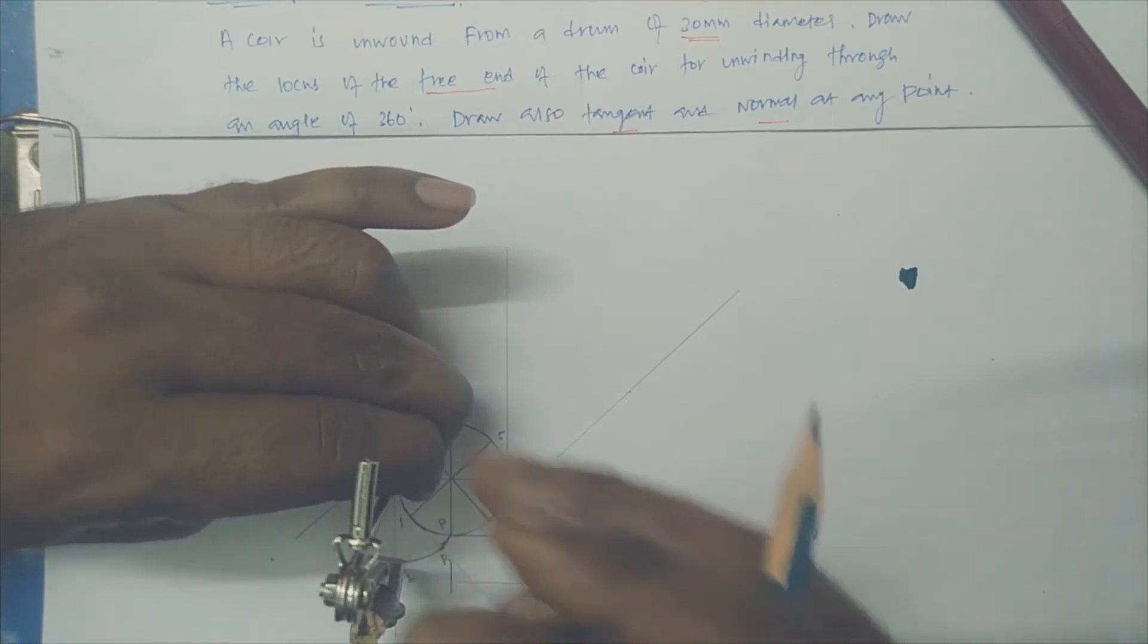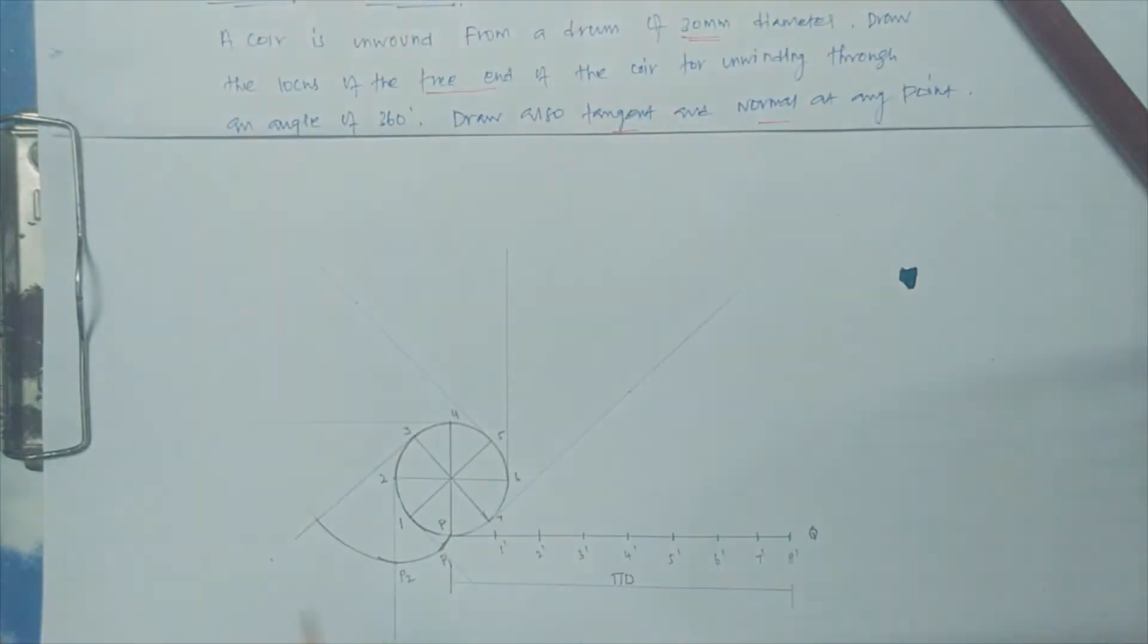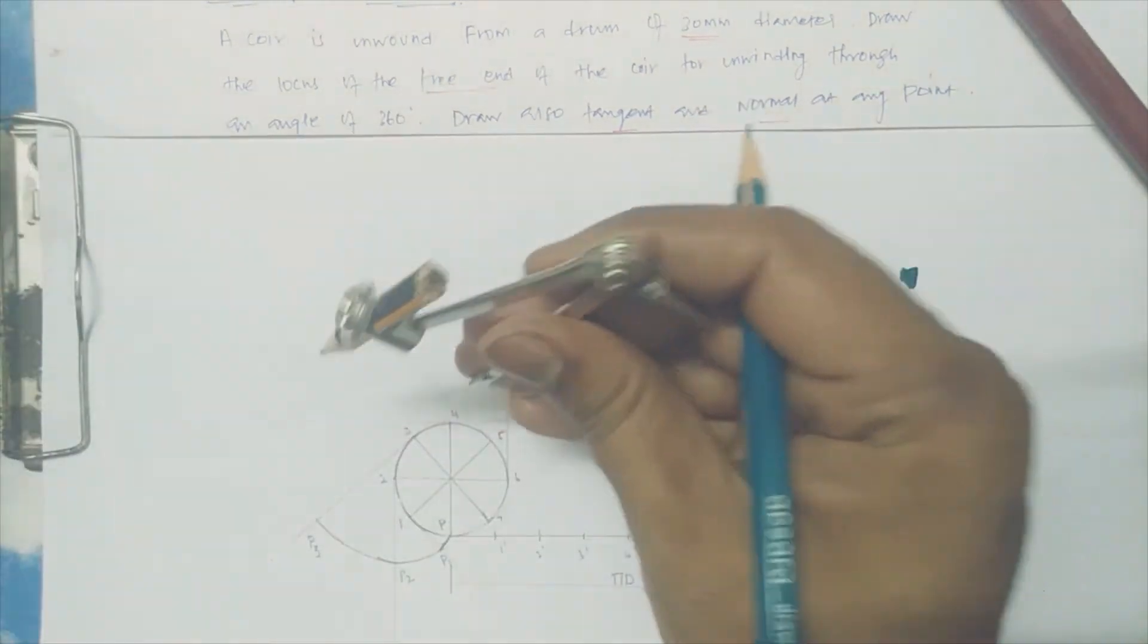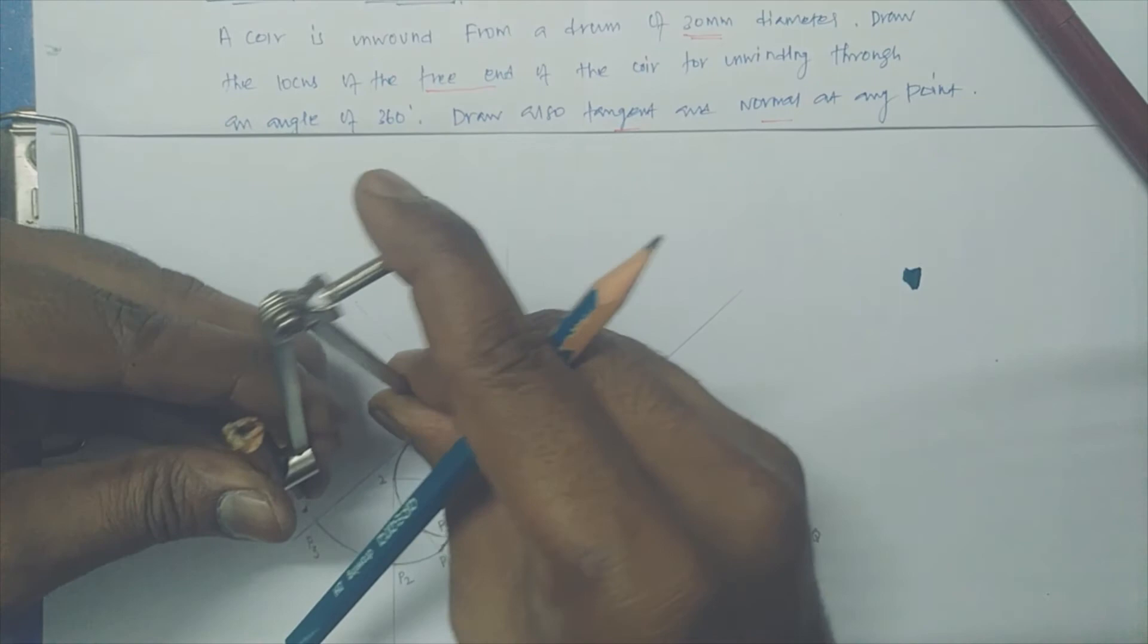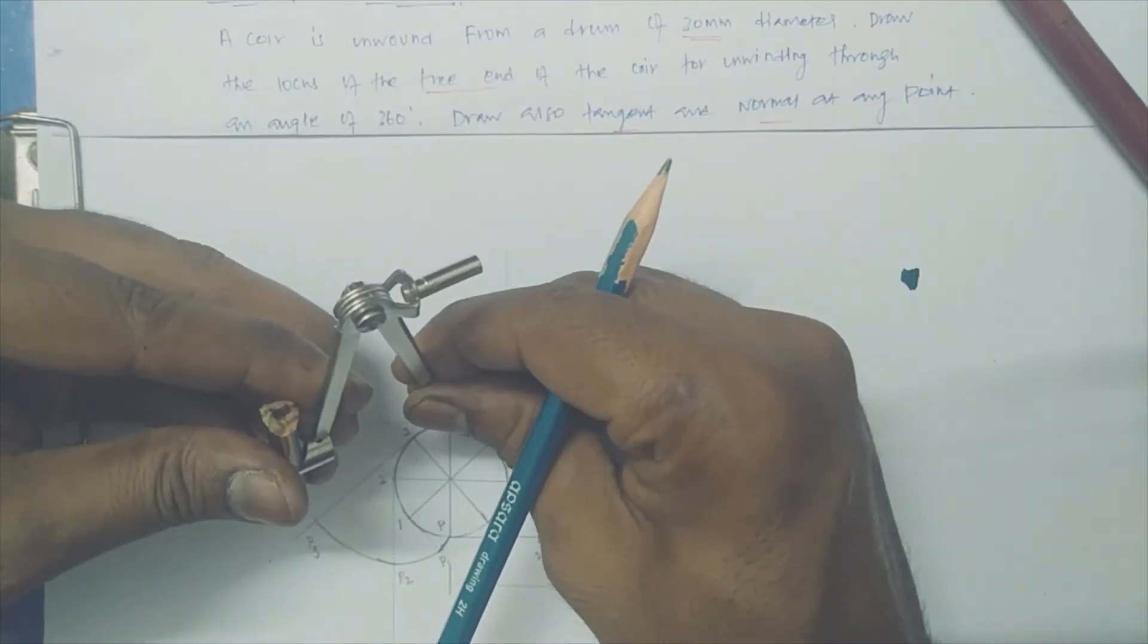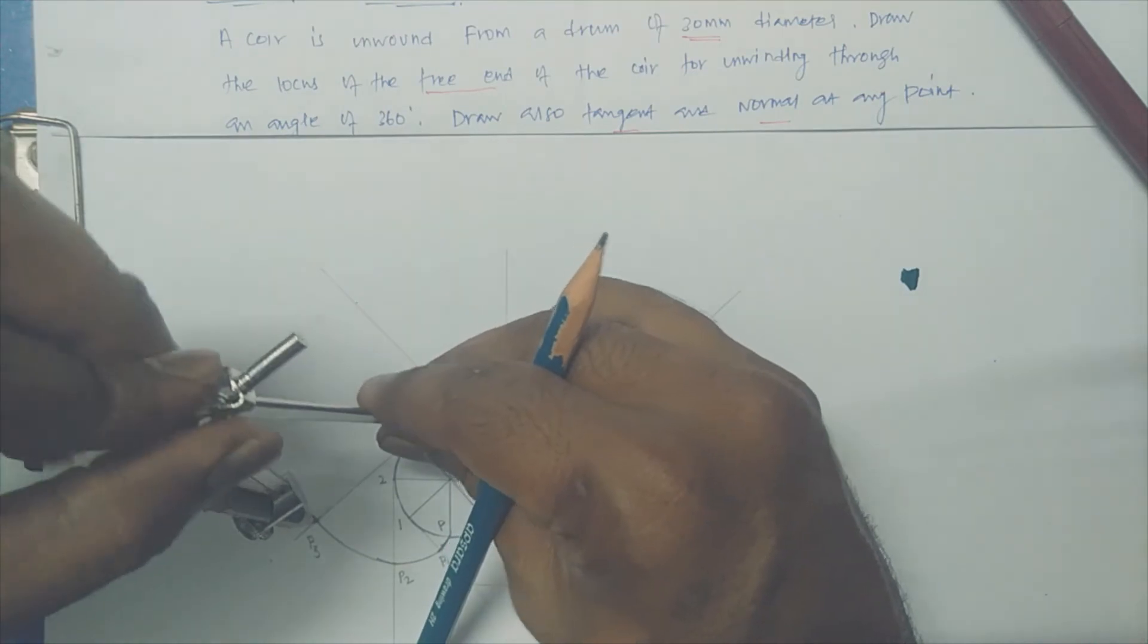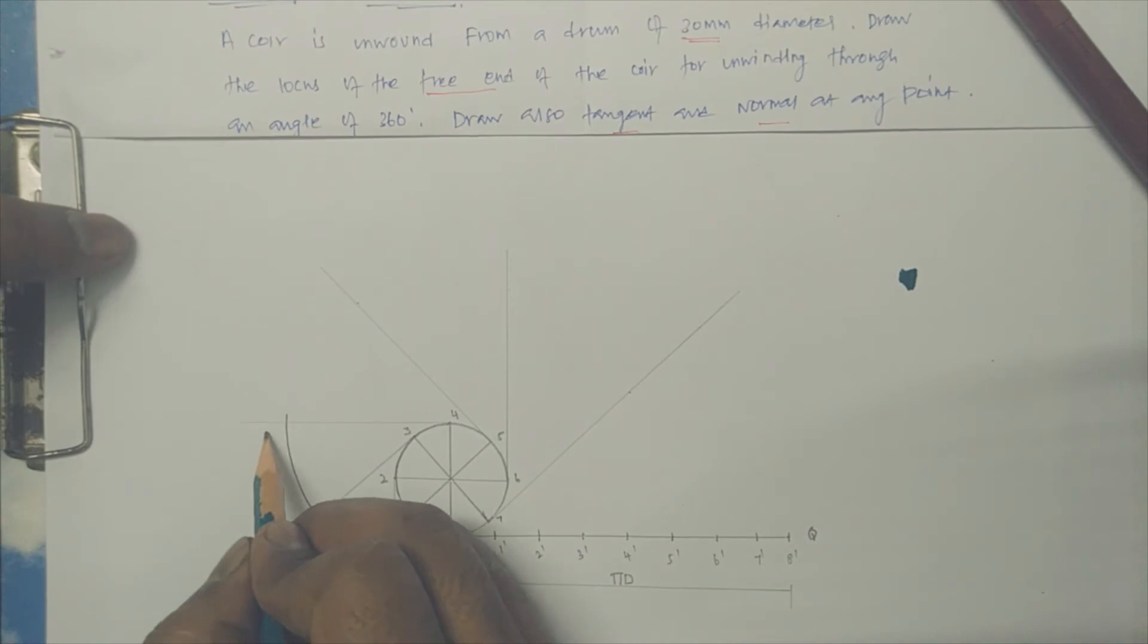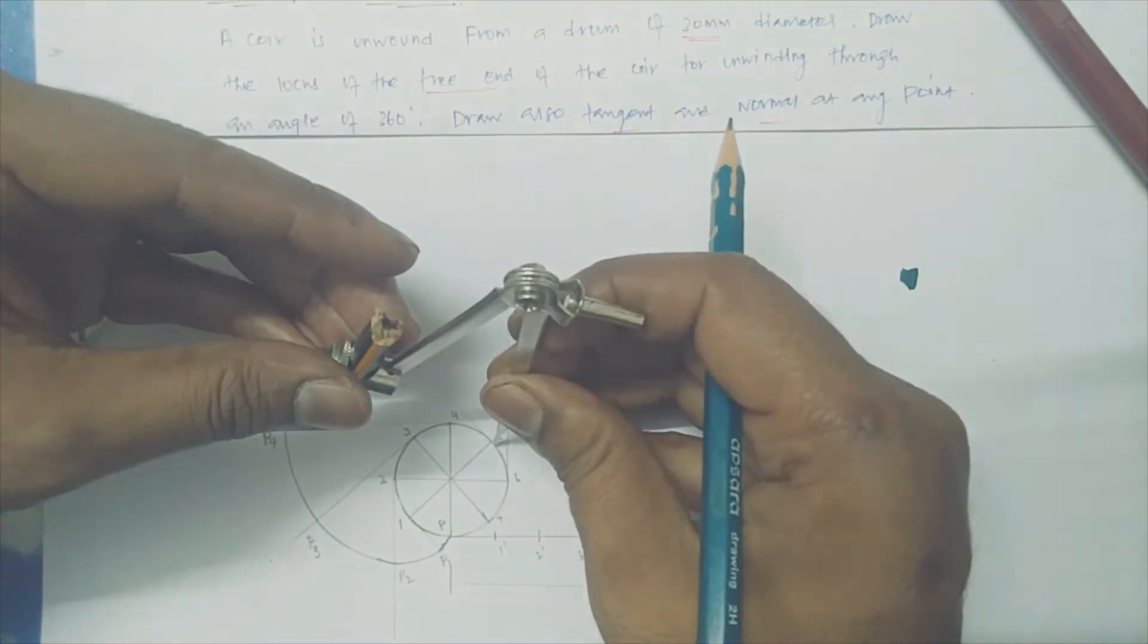This point is P2. Now you just keep 3 as a center, P2 as a radius, and drop the line. This will come like this, so this is P3. Now keep 4 as a center, P3 as a radius.